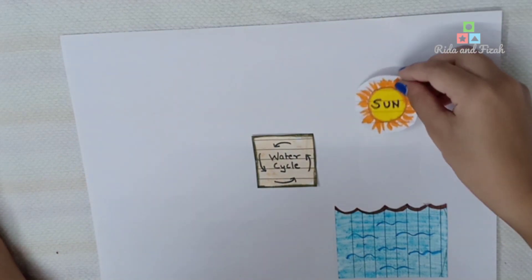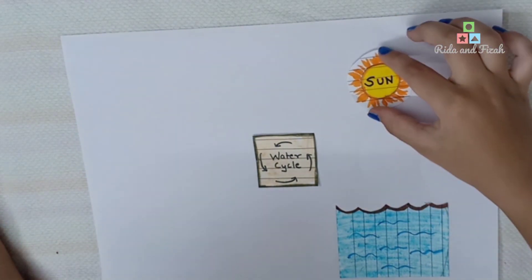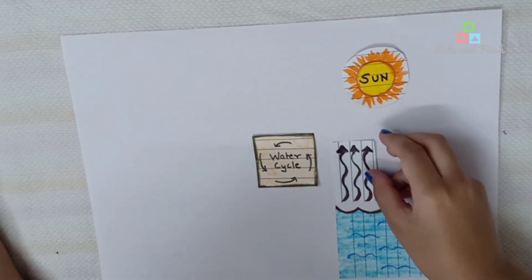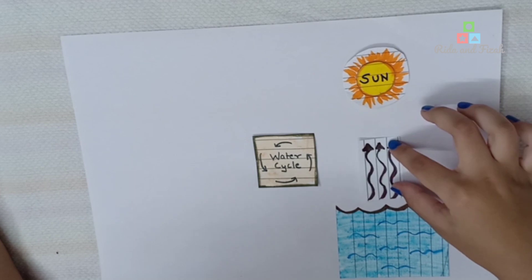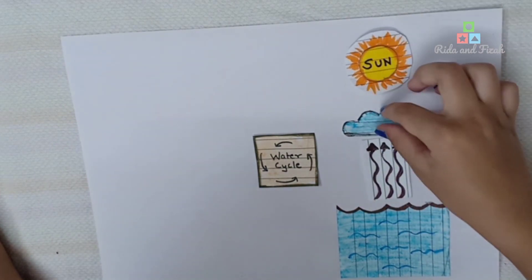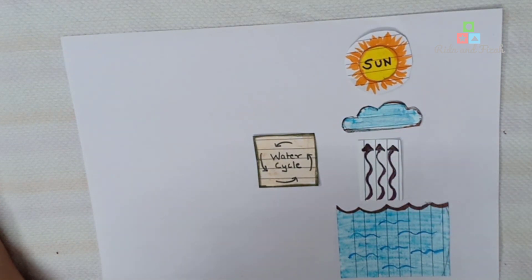Water from water bodies like the sea gets evaporated due to the heat of the sun. Water vapor is formed and rises in the air. This process is called evaporation.